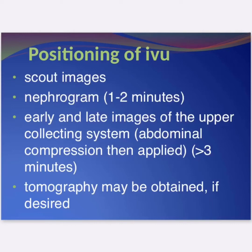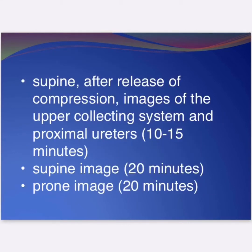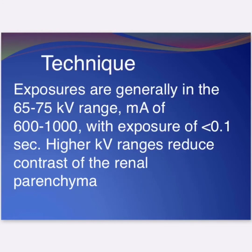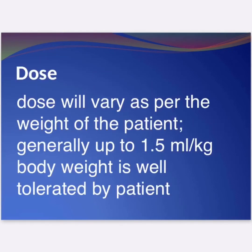The imaging sequence includes a scout film, nephrogram phase, early and late images, tomography images, supine images after releasing compression, and supine images at 20 minutes. Technique uses an average of 65 to 75 kV range and 600 to 1000 mA depending on the patient. Contrast dosage is approximately 1.5 ml per kg body weight.